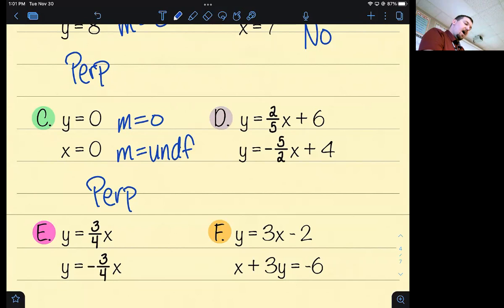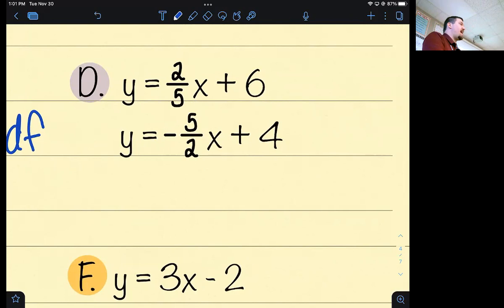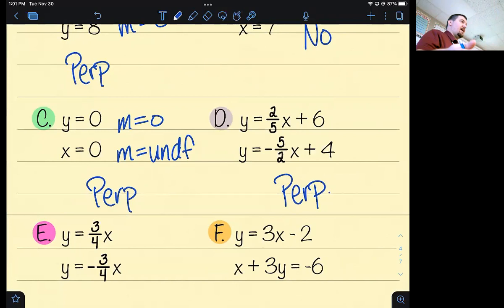Let's get into some more complicated ones. What about a slope of two fifths and a slope of negative five halves? Is that perpendicular? Yes, it is. They are negative reciprocals of each other. Who cares about the y-intercepts? They could be the same or different. It doesn't matter. I'm looking at the slopes here.